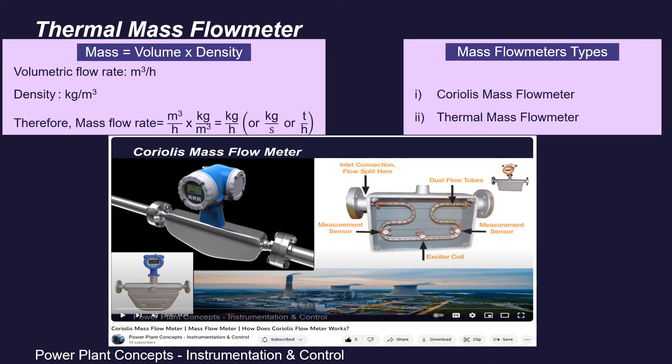We know that mass is volume into density. That means our volumetric flow rate, which we measure in meter cube per hour, when multiplied by the density of the fluid, which we measure in kg per meter cube, then we will get the mass flow rate: kg per hour, kg per second, or even TPH, that is ton per hour.